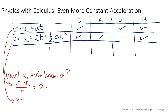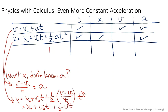So I get that x is equal to x0 plus v0 t plus one-half. Instead of a now, I'm going to put v minus v0 all over t times t squared, and I see that the squared goes away with this factor of t.